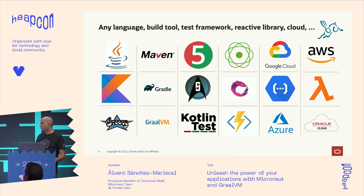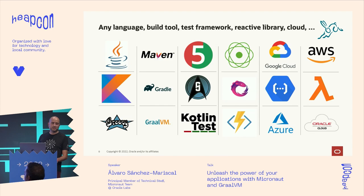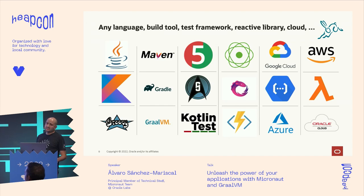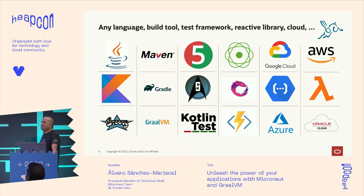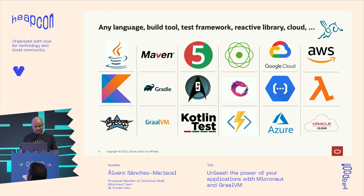Micronaut is a general-purpose framework supporting three languages: Java, Kotlin, and Groovy. We have tooling for Maven and Gradle, testing support for JUnit, Spock, and Kotlin co-test. There are integrations with all the major clouds and technologies.